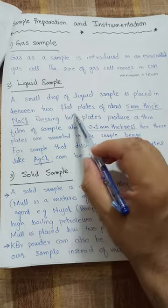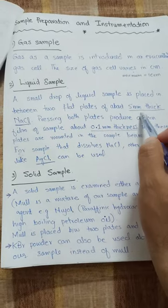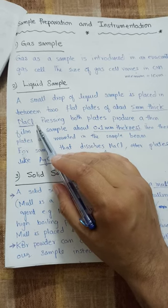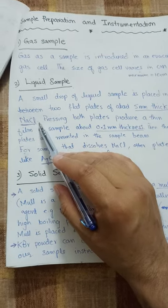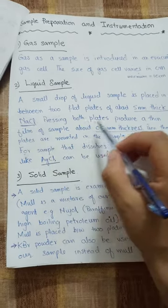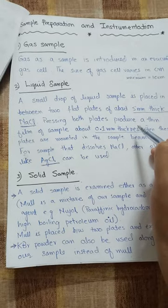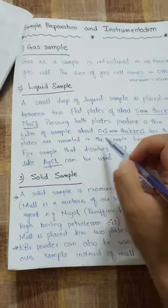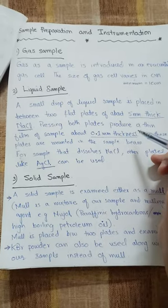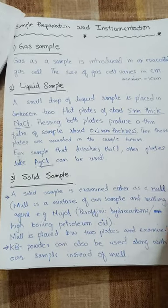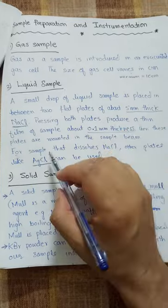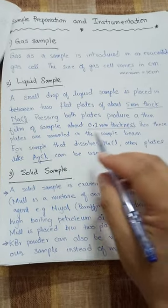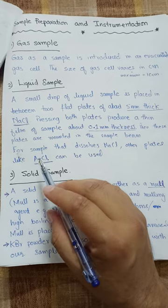For a liquid sample, a small drop of the liquid sample is placed between two flat plates of about 5 millimeter thickness made of NaCl (sodium chloride). Pressing both plates produces a thin film of sample which is about 0.1 millimeter in thickness. These plates are then mounted in the sample cell where the beam passes.